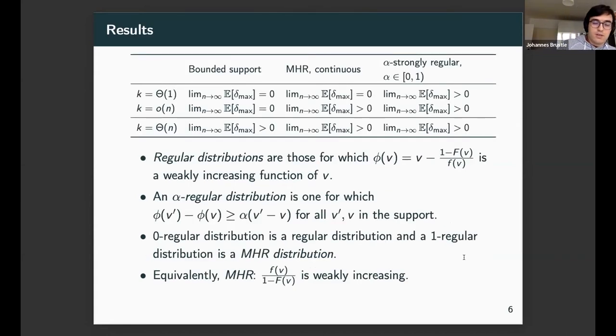Now our results summarized in a table. On the left, you have the number of items that could be constant, sublinear like square root n, or linear like one half n. On top, we look at different families of distributions: bounded support and two with non-bounded support, MHR and alpha-strongly regular. We take these distributions to be independent of n. Nevertheless, there's a surprising result. Let's start with some quick intuition with the simplest entry in this table on the top left.